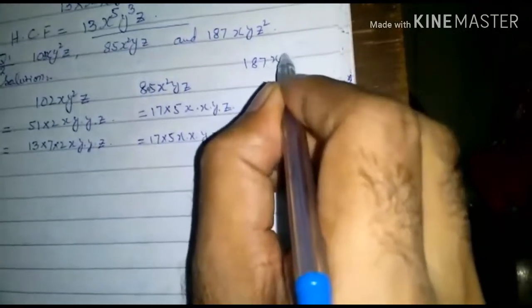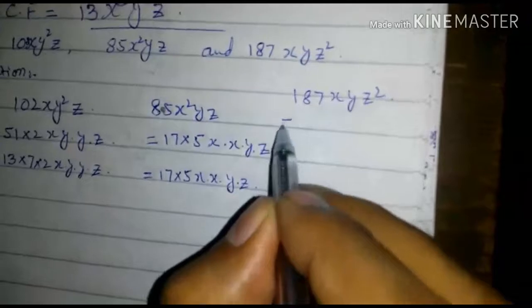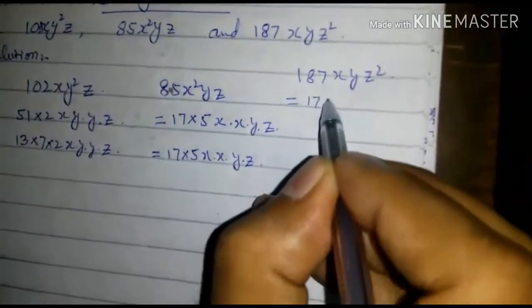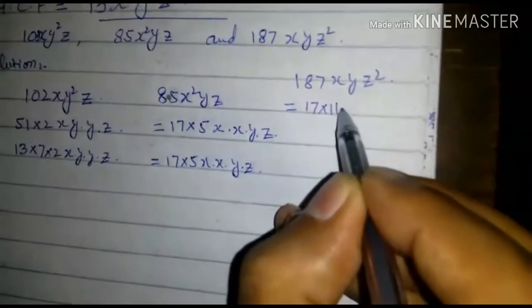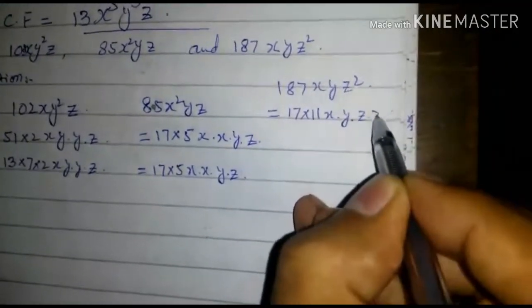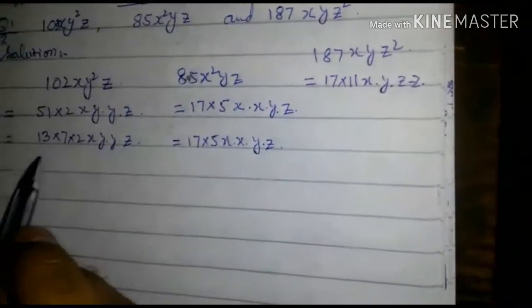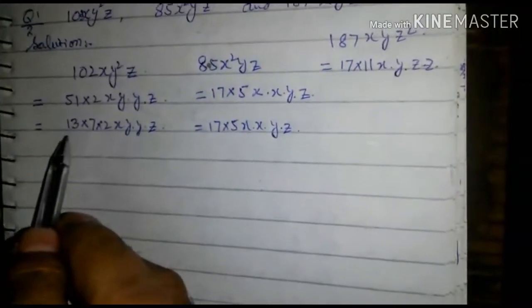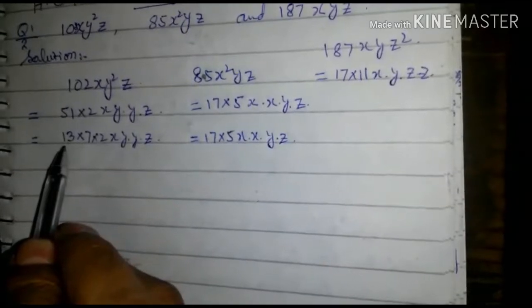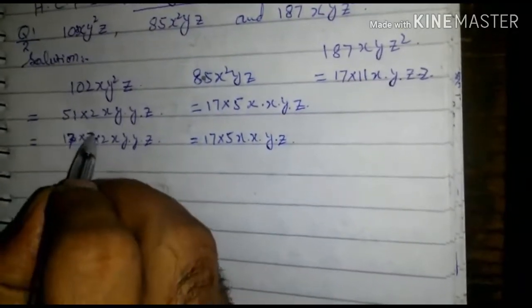187xyz² equals 17 into 11 x into y into z into z. Now we find... this is 17 into 3.